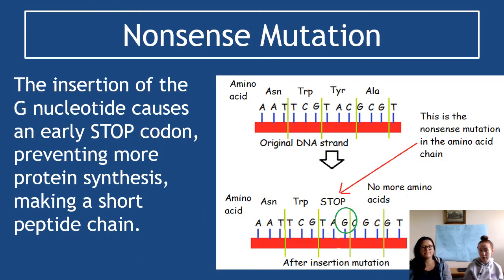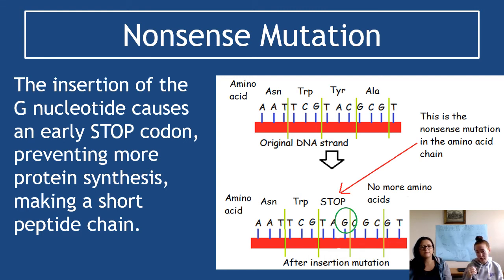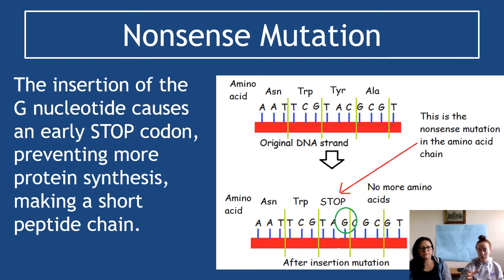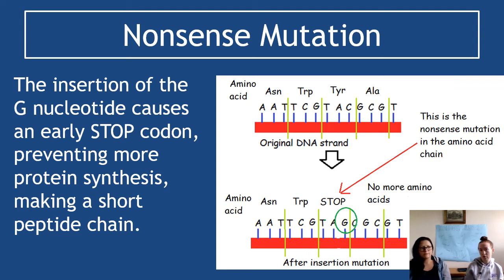Here is an example of a nonsense mutation caused by an insertion. A G is inserted into what was the codon for tyrosine on the top strand; with that G added, it becomes the stop codon TAG. Once the ribosome reaches that point, it stops translating — the amino acids that would be coded for after that, such as CGC, are never produced. The ribosome simply stops at the stop codon, resulting in a shorter peptide chain and a shorter protein, which then causes problems.